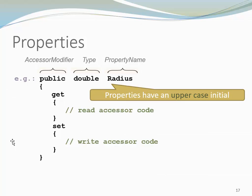Notice that properties have an uppercase initial. So this is the naming convention. Properties uppercase initial just like methods in C# have an uppercase initial.